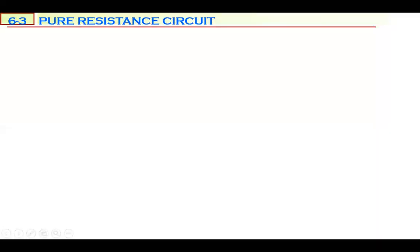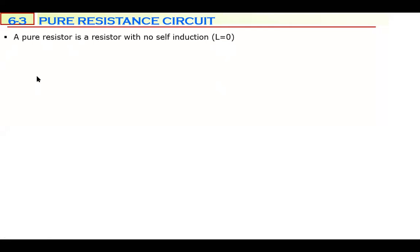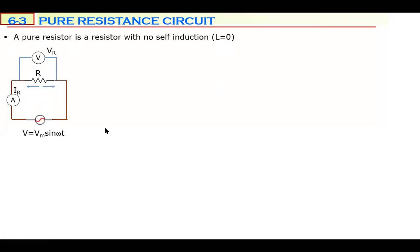First, we should define what 'pure resistance' means. A pure resistor is a resistor with no self-induction. It's a straight wire, not a coil, because every coil has an inductance — L cannot be zero for a coil. So when we talk about a pure resistor, imagine a straight long wire.